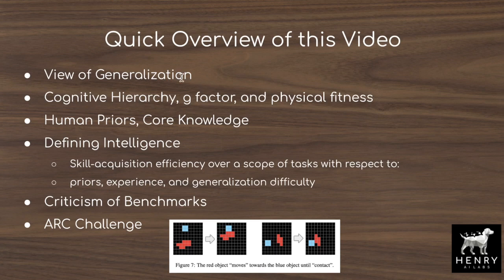Then we'll look at the cognitive hierarchy. Chollet describes a G-factor used in psychometric tests to find a common ability across different IQ test performances. A good example is physical fitness — a world-class marathon runner, bench presser, and basketball player would all share some common physical ability, like lung capacity. They're trying to find this common factor present across different cognitive tasks.